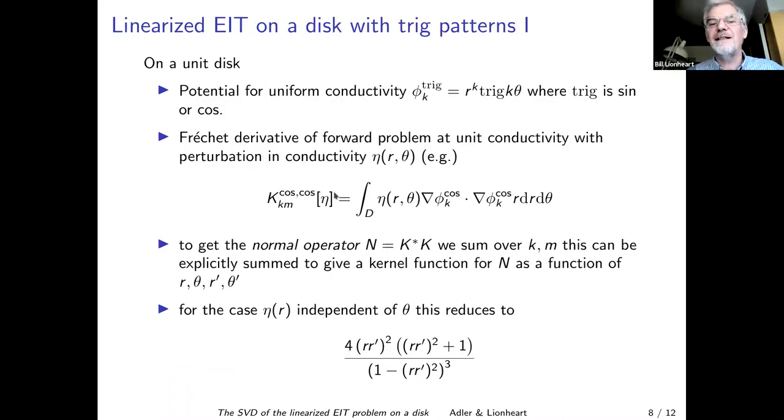Now let's do the EIT version. We get the linearized EIT problem on the disk and we solve for the potential with conductivity one, and it's r to the k, cosine k theta. The Fréchet derivative, the sensitivity for that trig measurement is eta of r times the dot product of the gradients of the potential. To get the normal operator, we multiply by the adjoint, which means summing over the k and n indices.